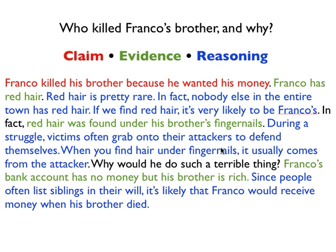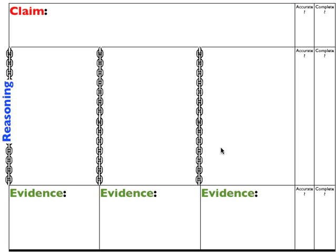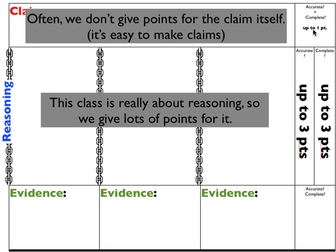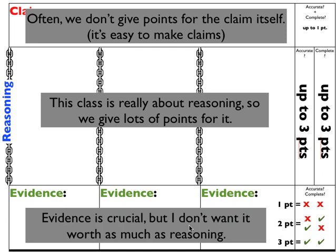So you've written an explanation and want to know if you did a good job. We need a scoring criteria. With the claim, we often don't give points for it — it's easy to make claims — but there can be up to one point for an accurate and complete claim. Reasoning is what the class is really about, so we give up to three points for accuracy and separately up to three points for completeness. For evidence, accuracy and completeness are merged: one point if both are problematic but you gave it a good try, three points if it's accurate and complete, and two points if it's one but not the other.